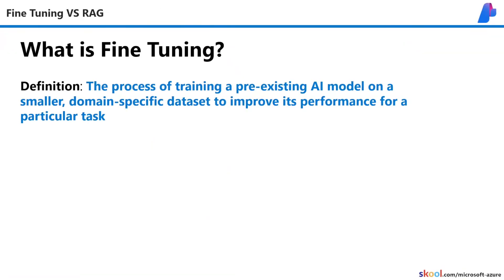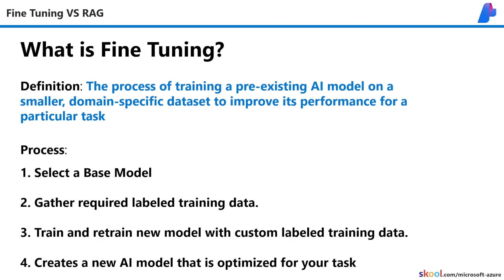So what is fine-tuning? Fine-tuning is the process of training a pre-existing AI model on smaller domain-specific datasets to improve its performance for a particular task. To fine-tune a model, you'll choose an existing base model, use your own labeled training data, and train and retrain that base model with your training data to create a new AI model that's specialized for you.